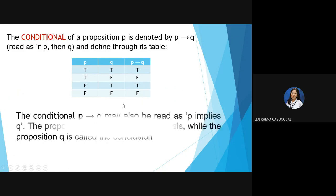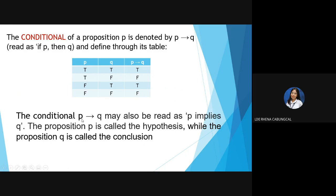The conditional P → Q may also be read as 'P implies Q.' The proposition P is called the hypothesis, while proposition Q is called the conclusion.